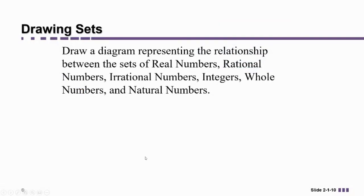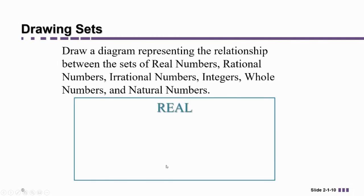All right, so I want to show you an example of a diagram where we represent the relationships between these sets that we just discussed. The real numbers, the rational numbers, irrational numbers, integers, whole numbers, and natural. So the largest set is the set of real numbers. So this is going to be considered our universal set, because we're not going to consider anything besides real numbers.